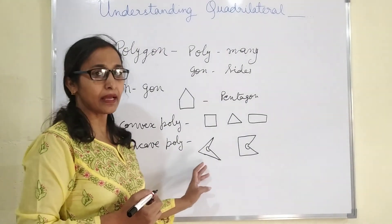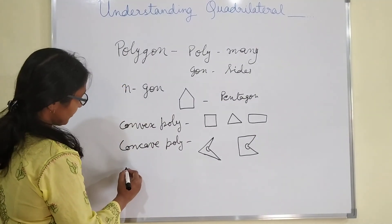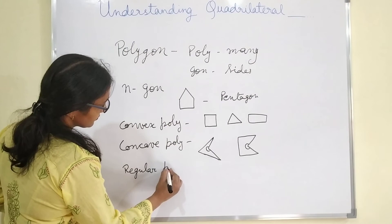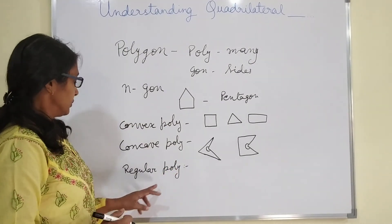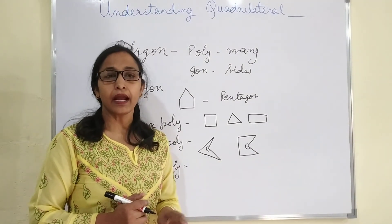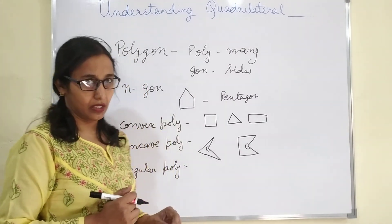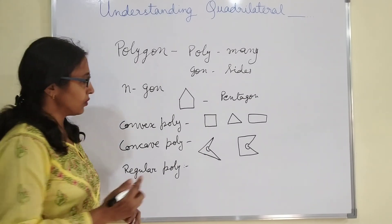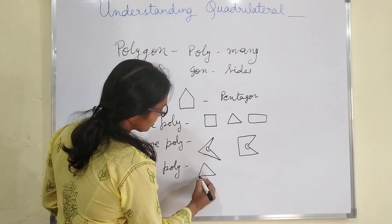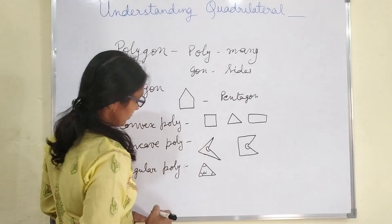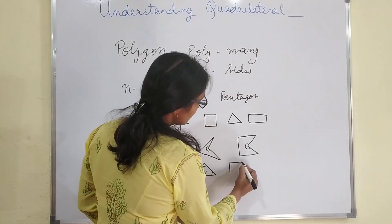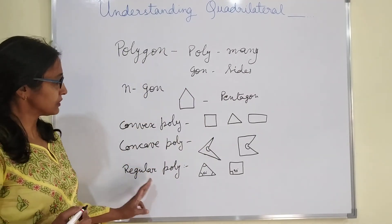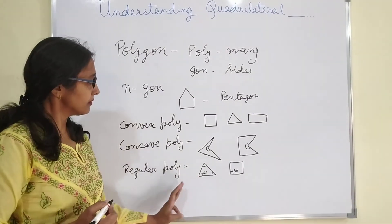In a concave polygon, at least one angle is more than 180 degrees. The next term is regular polygon. In a regular polygon, all the sides and all the angles of the polygon should be equal — same sides and same angles. If sides are equal, then angles will also be equal. For example, in an equilateral triangle, all angles are 60 degrees. In a square, all angles are 90 degrees. So equilateral triangle and square are regular polygons.